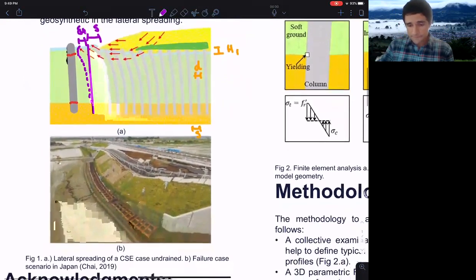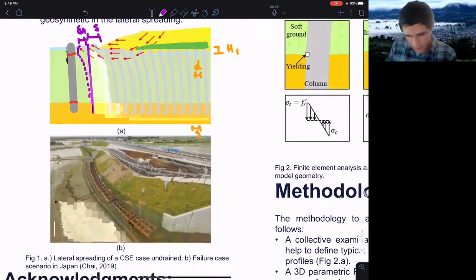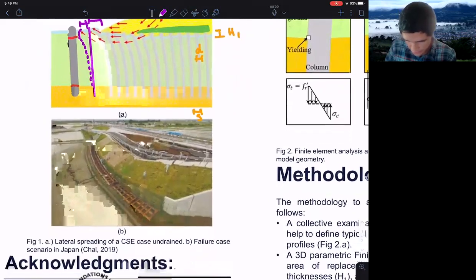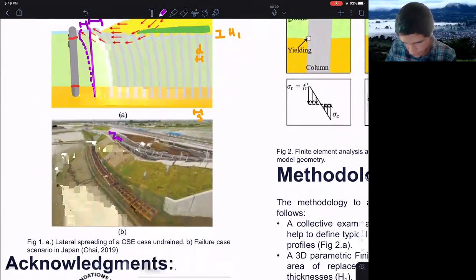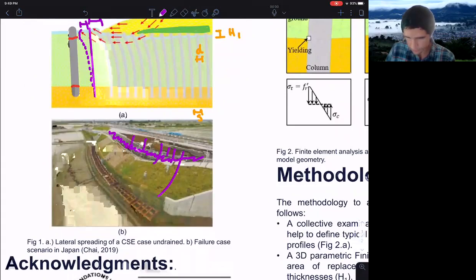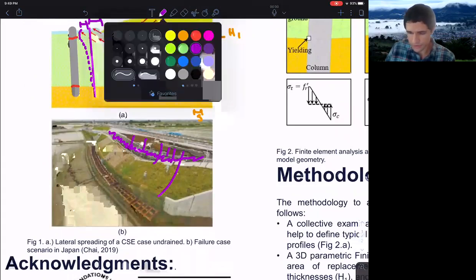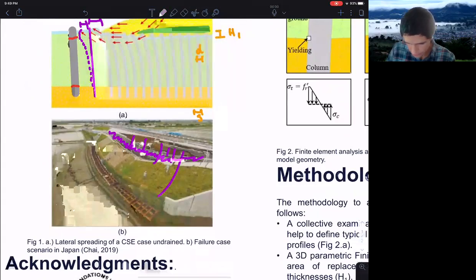This is a failure case in Japan in which you can see that this road has failed. You can see here the failure surface and we see that the columns were tilted at the end.